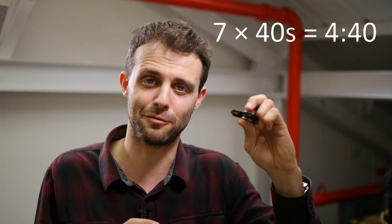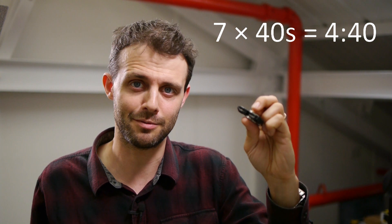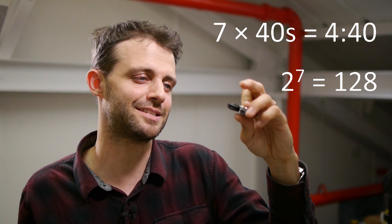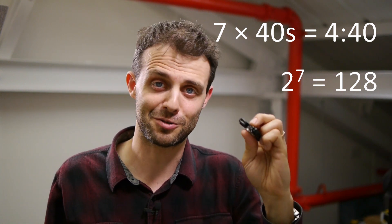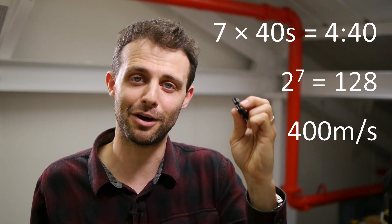That's the problem with exponential decay. If I wanted this thing to spin for twice as long — an extra 4 minutes and 40 seconds — I would need to double the speed for every extra 40 seconds. There are seven lots of 40 seconds in 4 minutes and 40 seconds, so I would need to double the initial speed seven times, or two to the power of seven — that's 128. I would need to increase the initial speed by a factor of 128, which in this case is 400 meters per second — a little bit over the speed of sound.